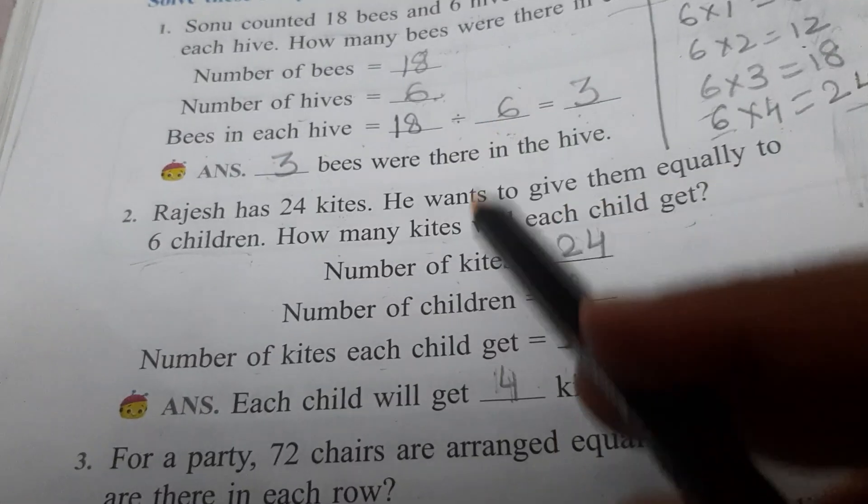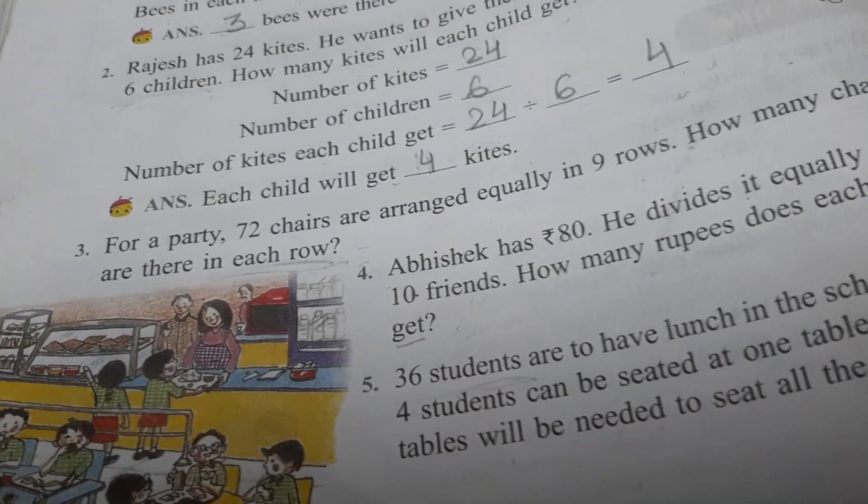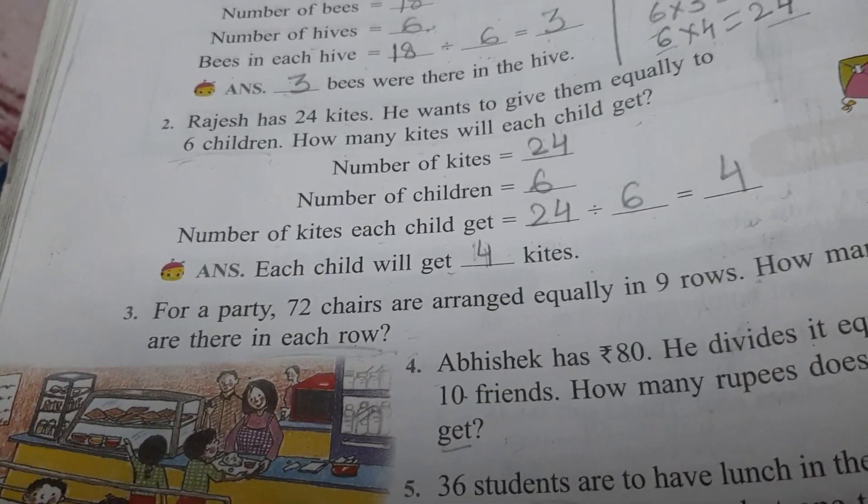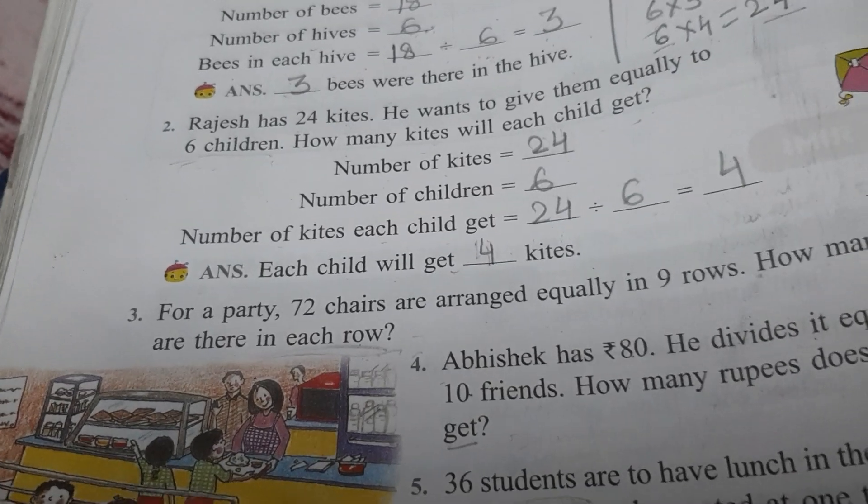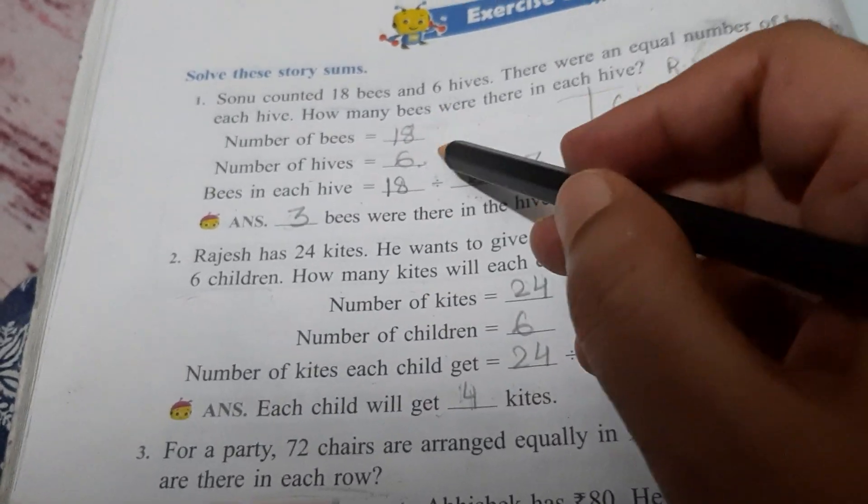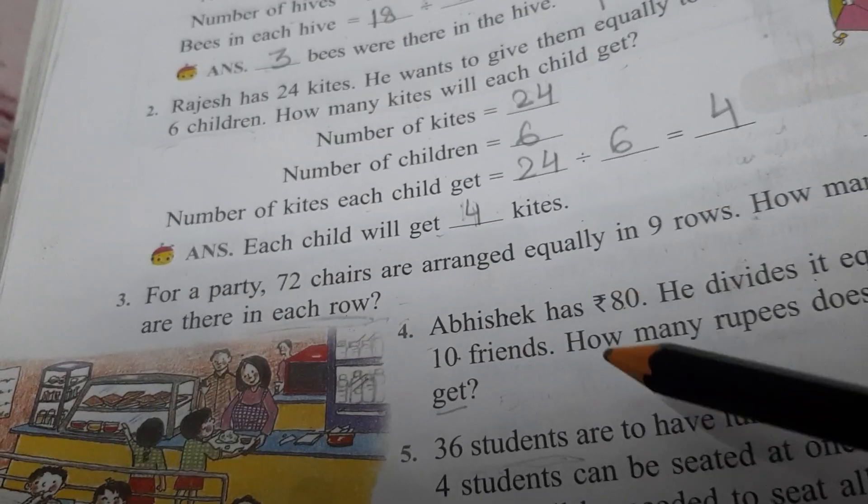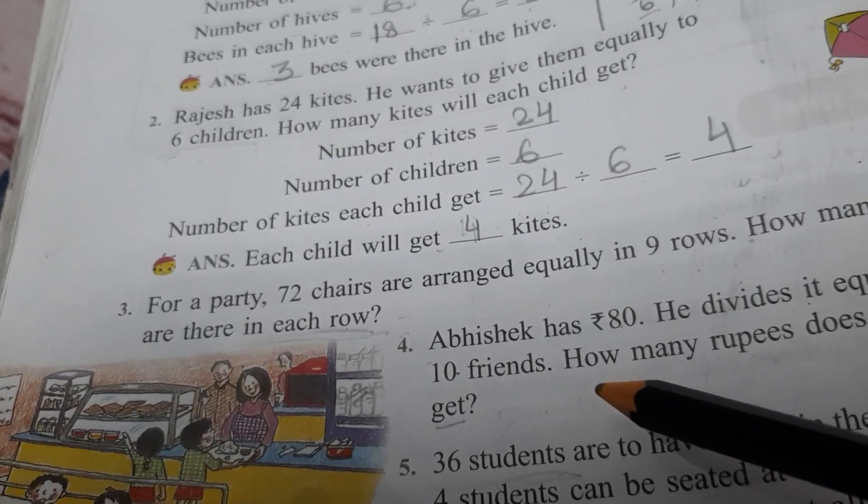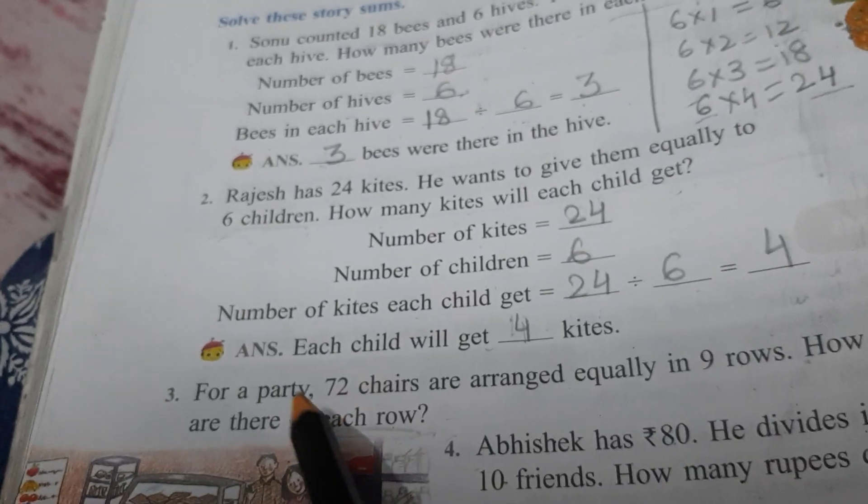So like these two sums, you will do next three sums. In these three sums, statement is not given for you. Like in these two sums, it was given. Now in next three sums, you will write statement yourself. It's very easy.